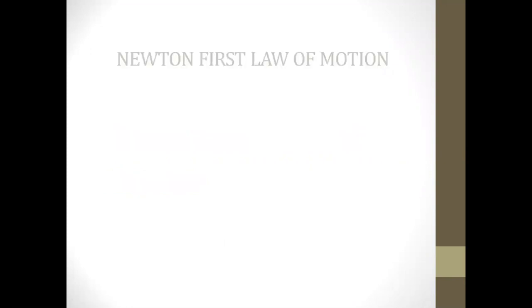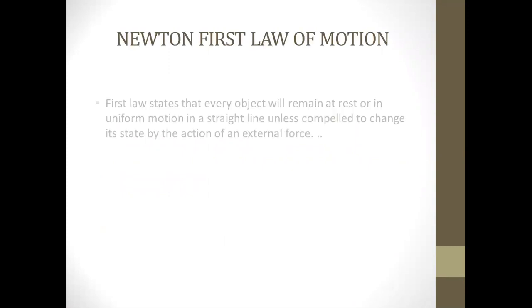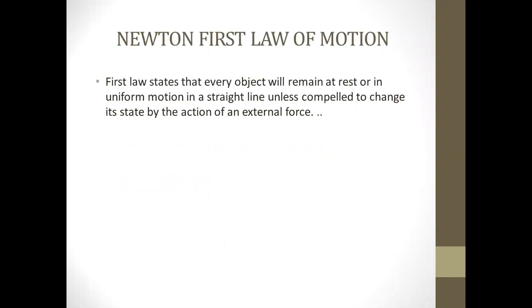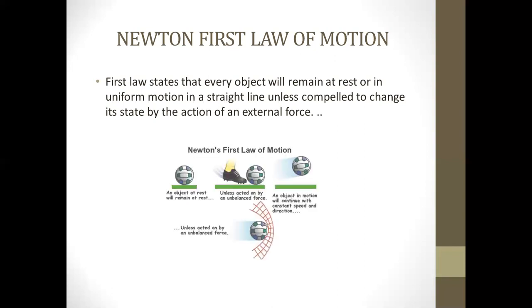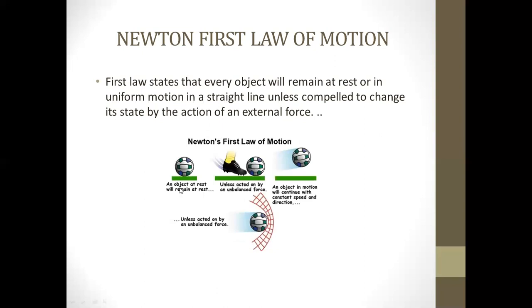So what is Newton's first law of motion? According to Newton's first law of motion, every object will remain at rest or in uniform motion in a straight line unless and until an external unbalanced force acts on it. Means if an object is at rest it will remain at rest, and if an object is in motion it will continue with constant speed unless an external unbalanced force acts on it.